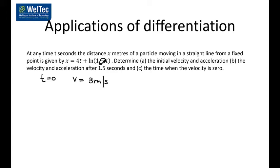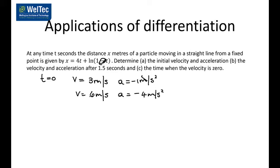The acceleration was negative 1 meters per second squared. Doing the same at t equals 150, the velocity is equal to 6, and the acceleration is equal to negative 4 meters per second squared. To find the time when velocity is zero, you have the velocity function and simply solve when it equals zero — the answer is t equals 3 over 4.